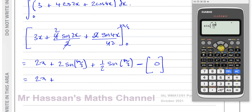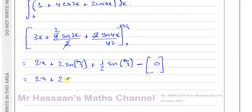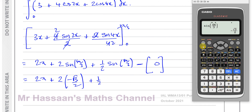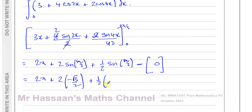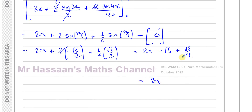Evaluating: sin(4π/3) = −√3/2, so 2·(−√3/2) = −√3. And sin(8π/3) = √3/2, so (1/2)·(√3/2) = √3/4. Therefore the total area is 2π − √3 + √3/4 = 2π − (3√3/4) square units.